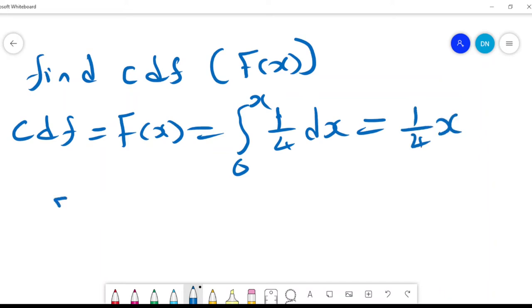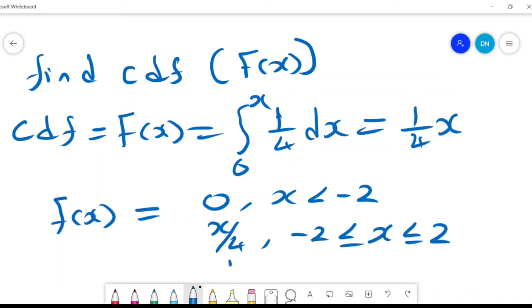Therefore we can comfortably say that our F(X) equals 0 when X is less than negative 2, it's X over 4 when X lies between 0 and 2, and it is 1 when X is greater than 2.